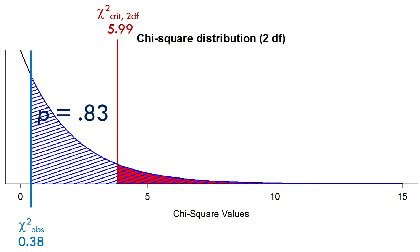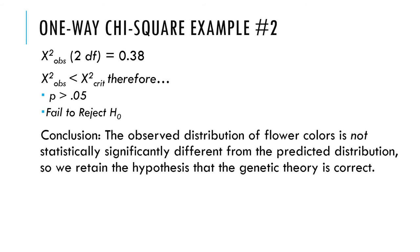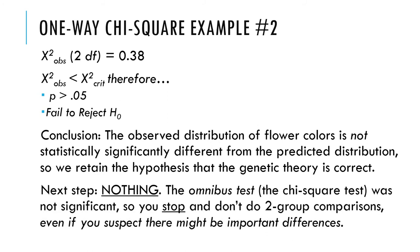We're still not going to reject the null hypothesis. Our p-value is 0.83. That's definitely bigger than 0.15. Even leaving aside me picking the wrong critical value, if you know the p-value, you don't need to know the critical value. P equals 0.83, that's gigantic. So we do not reject the null hypothesis. We fail to reject it, which is good. So the observed distribution is not significantly different from the predicted distribution. We retain the hypothesis that the genetic theory is correct. Since we didn't reject the null hypothesis, there's nothing else to do.